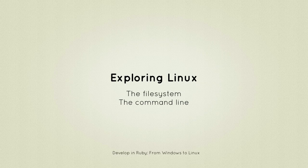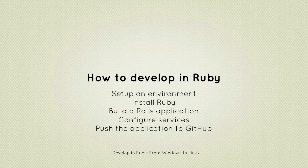Finally, we'll develop a very simple Ruby application — a Rails application to be specific. We're going to set up our environment, install a Ruby version, then we're going to build our application, really simple. Then we're going to configure some services, such as a database and a web server. And finally, we're going to push the application to GitHub, to explain in a little more detail on some tools that require the command line and everything.